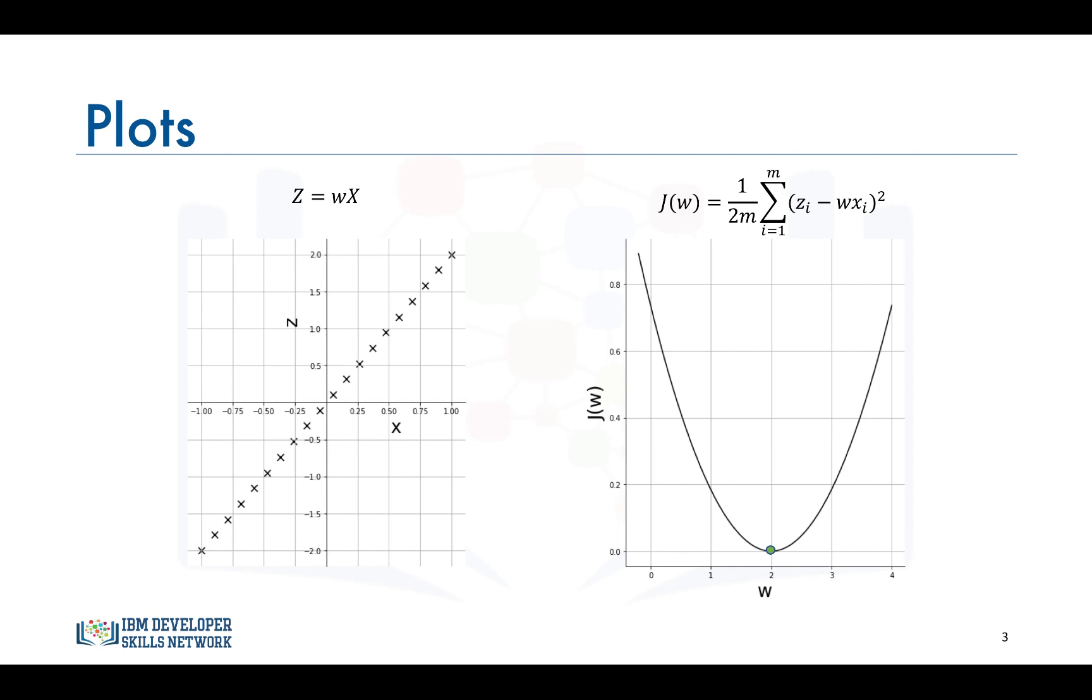This is a very simplified example as in real-world data sets, the target variable z would be dependent on more than one variable and we can't just simply plot the cost function and visually determine the best value of the weights. So how do we determine the best value of w? The best value of w or w's in case you have many weights to optimize is determined through an algorithm called gradient descent.